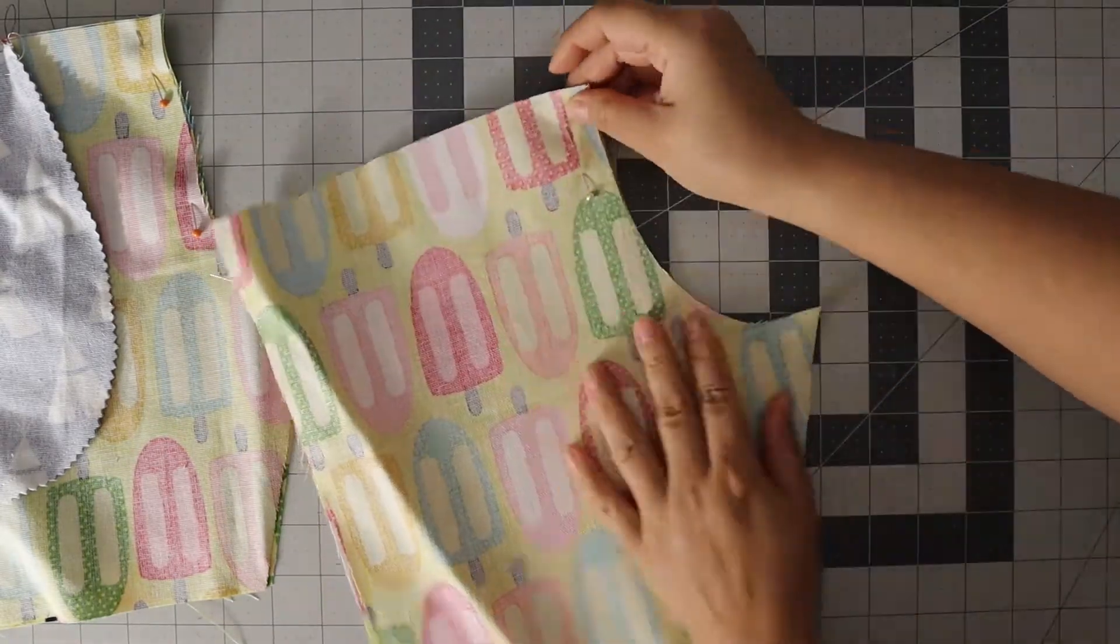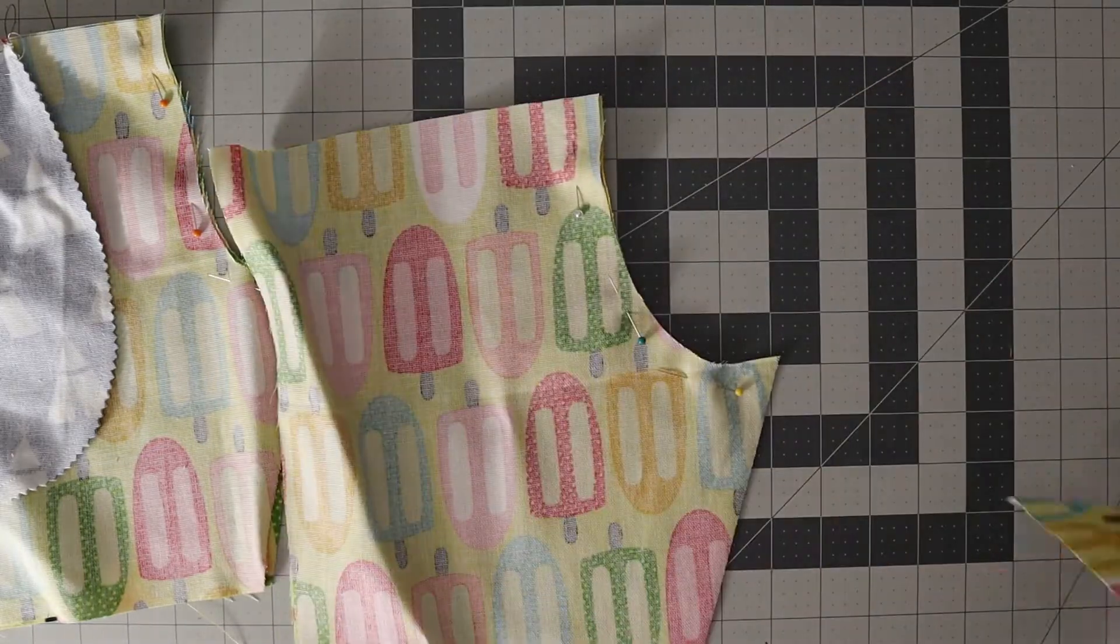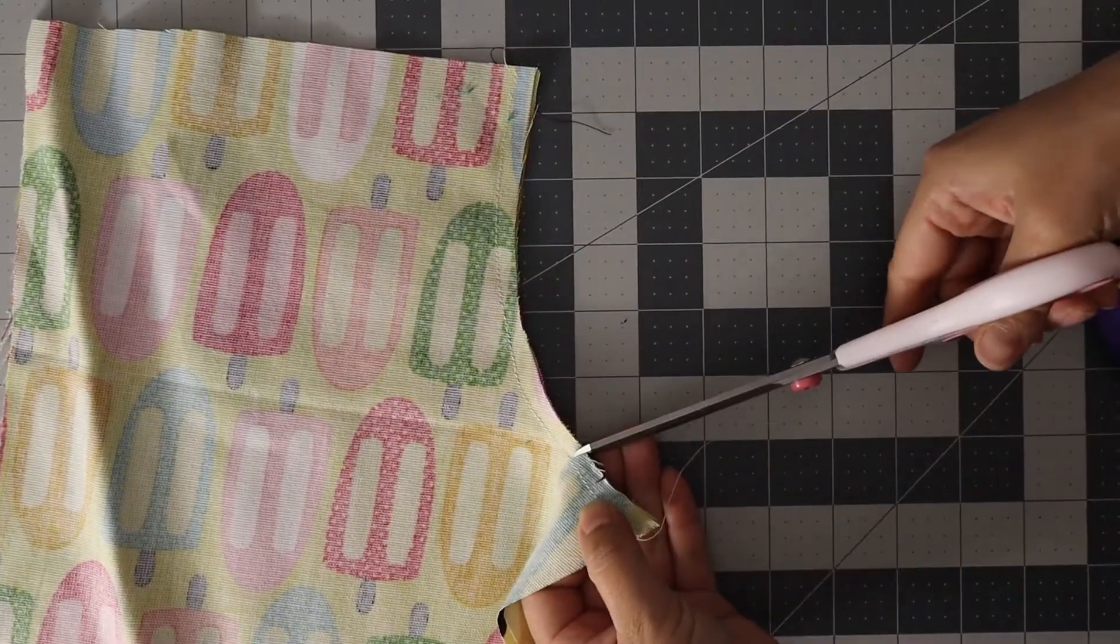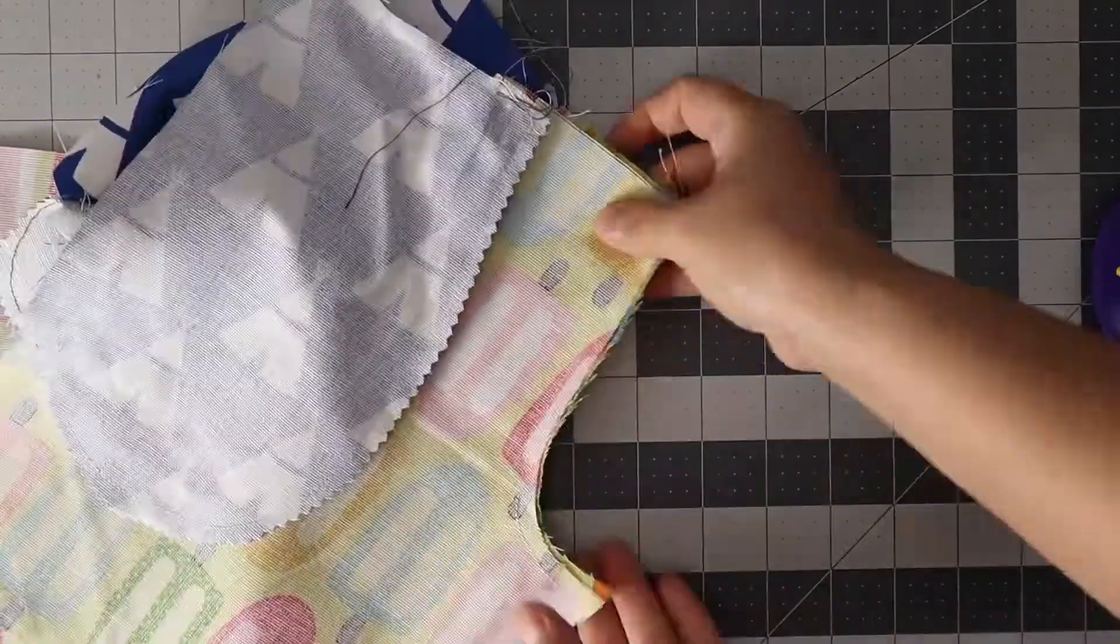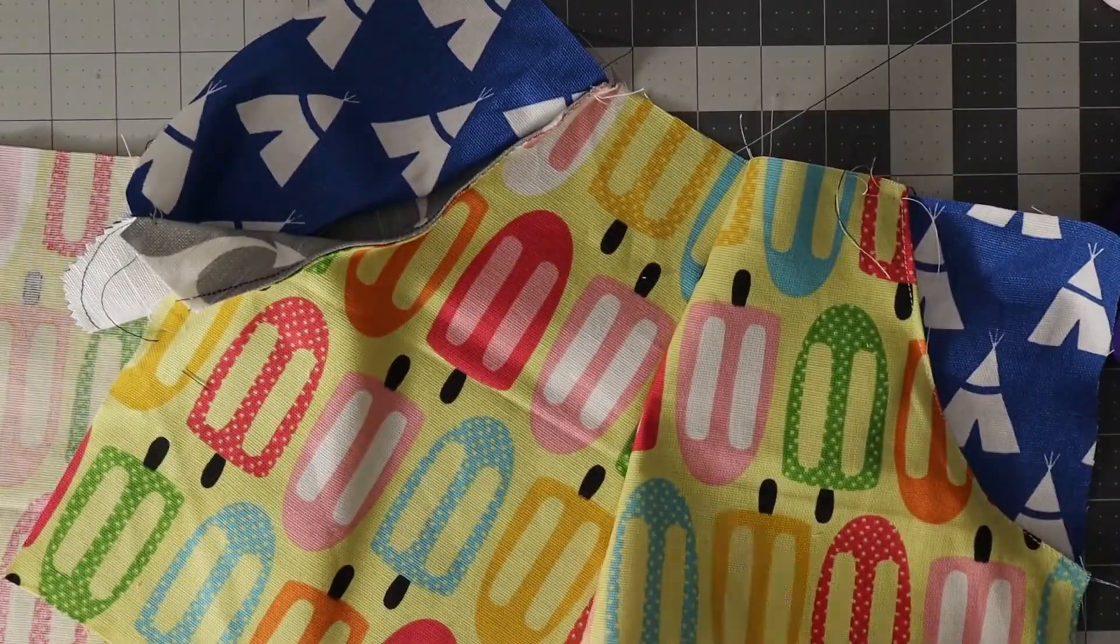And do the crotch. This is the shorts version but this works equally well for the trousers or the long pants version. So now we've done that, we're going to clip the crotch, and then after you do this you can go ahead and finish the seam with a serger or with pinky shears or zigzag.